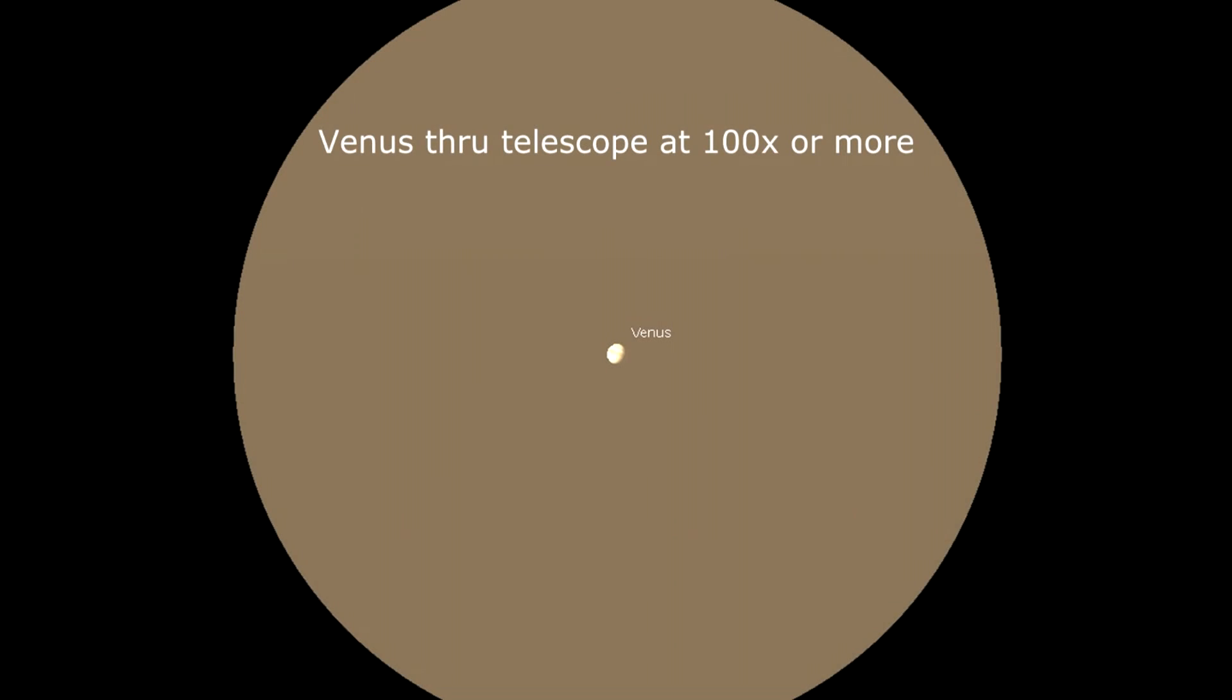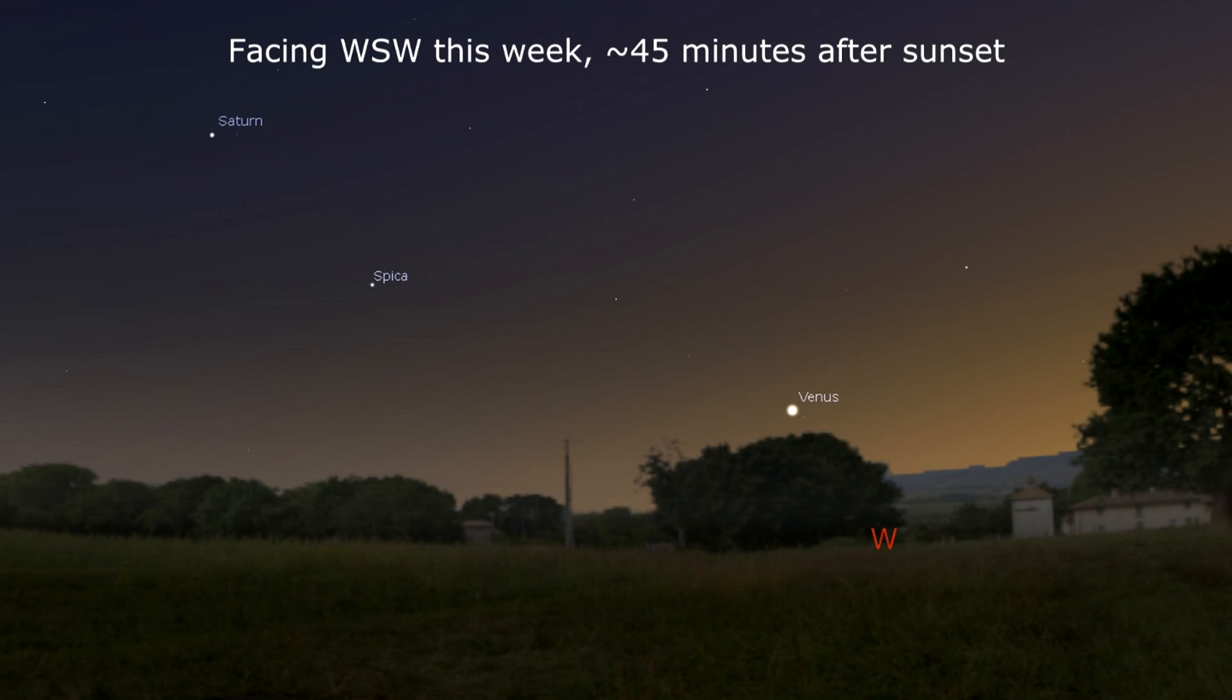At 100 times or more on Venus, a gibbous phase is clearly seen, though look early in the evening while the planet is still above the horizon after sunset.